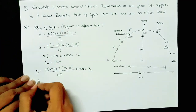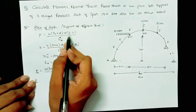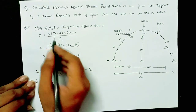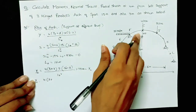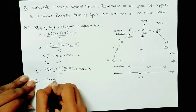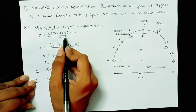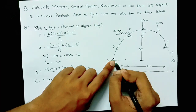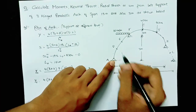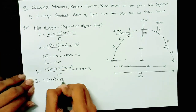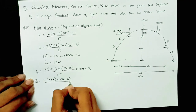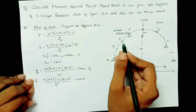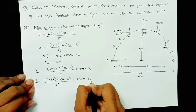Calculating rise at E: ye = 4(3 + 1) · 4 · (16 − 4) / 16² = 3 meters. Here x = 4 meters (distance from support A to point E). The same rise applies to point K: y_K = 3 meters.